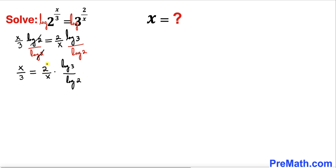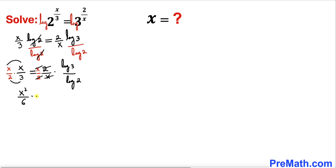Now let's multiply both sides by the reciprocal of 2 over x, which is x divided by 2. On the right hand side the x's cancel and the 2's cancel. On the left hand side, x times x gives us x squared, divided by 2 times 3 which is 6, equal to log of 3 divided by log of 2.